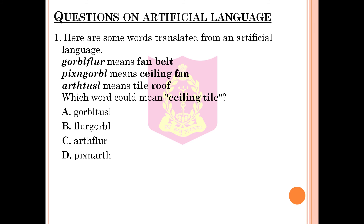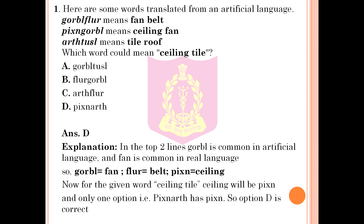The last topic under Logic and Reasoning is questions on artificial language. Question 1: Here are some words translated from an artificial language. 'Gorbel fleur' means fan belt. 'Pinks gorbel' means ceiling fan. 'Earth tussle' means tile roof. Which word could mean 'ceiling tile'? Option A: Gorbel tussle, Option B: Fleur gorbel, Option C: Earth fleur, Option D: Pinks earth. The correct answer is Option D. Explanation: Gorbel = fan, fleur = belt, pinks = ceiling. For 'ceiling tile', ceiling is pinks, and only Option D — pinks earth — contains pinks. So Option D is correct.